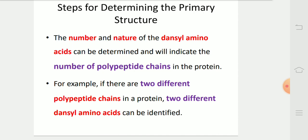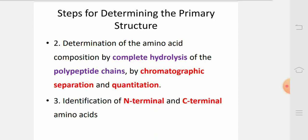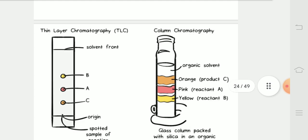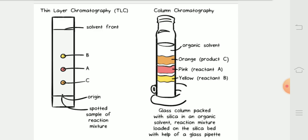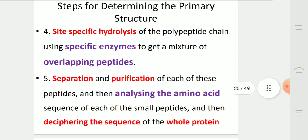The number and nature of the dansyl chloride amino acids can be determined and will indicate the number of polypeptide chains in the protein. For example, if there are two different polypeptide chains in a protein, two different dansyl chloride amino acids can be identified. Determination of the amino acid composition by complete hydrolysis of the polypeptide chains and chromatographic separation and quantitation. Then, identification of N-terminal and C-terminal amino acids. In this diagram, we can see thin layer chromatography and column chromatography.